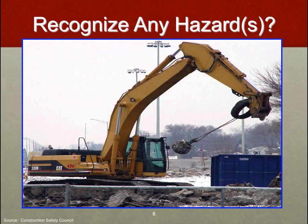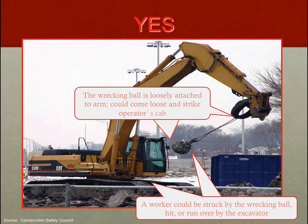This one is a real picture — we have a wrecking ball and an operator swinging it in very close proximity to the cab. OSHA notes that the wrecking ball is loosely attached to the arm and could come loose and strike the operator's cab. Additionally, a worker could be struck by the wrecking ball, hit, or run over by the excavator. Although there's some humor in this photograph, OSHA's comments are apt — there is a significant hazard and someone could likely get hurt from a similar scenario.